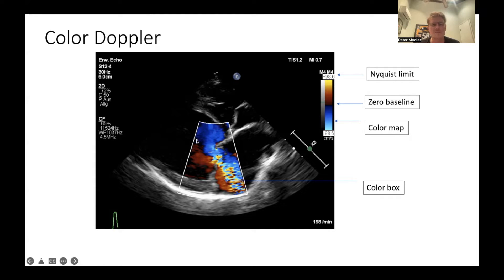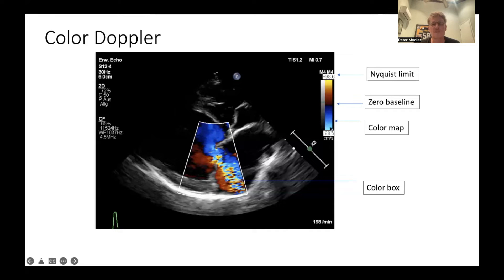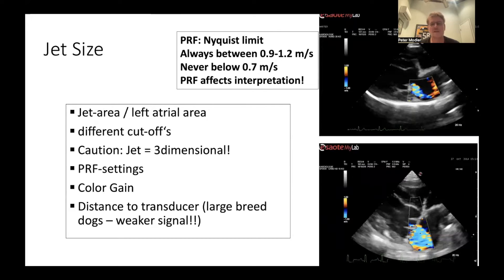This is a typical color Doppler image. What you can see is the two-dimensional grayscale image superimposed by the color Doppler within the color box — the region where blood is interrogated for velocities. On the right side of the image you see your color map. The most frequent setting on ultrasound machines is that blue means blood is flowing away from the transducer and red means blood is flowing towards the transducer, with shades of red and blue giving a semi-quantitative impression of velocity. Very important is the Nyquist limit number shown at the top and bottom — here it is set to approximately 98.6 centimeters per second.